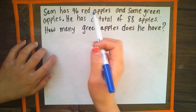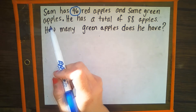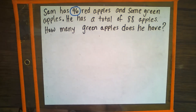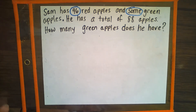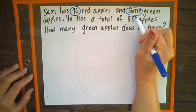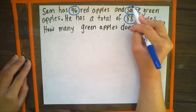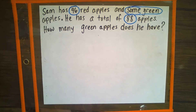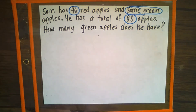Sam has 46 red apples — pause right there, we have an important number already: 46. Sam has 46 red apples and some green apples. We don't really know what that is, but we do know that the word 'some' is really important. Some green apples — I don't know how many, we're going to figure that out. He has a total of 88 apples. We're going to circle 'some green' all the way because 46 red is different from some green — it helps us tell the different apples apart. How many green apples does he have? That's our question.